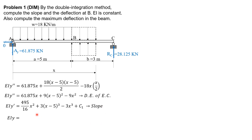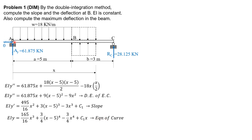Integrating again, we have EI y equals 165/16 x cubed plus 3/4 (x minus 5) to the 4th minus 3/4 x to the 4th plus C sub 1 times x plus C sub 2. But C sub 2 is zero because origin A is a support with no deflection. The interpretation of C sub 2 divided by EI is the deflection at A, so it is zero. When x is 0, y is 0, confirming C sub 2 is 0.